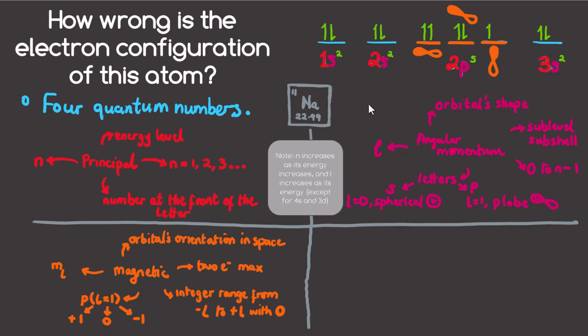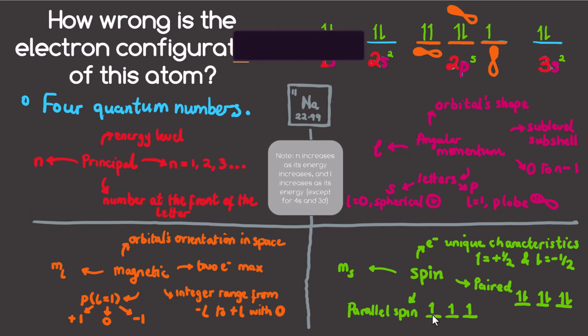The final one is called the spin quantum number, notated as ms. This reflects the intrinsic angular momentum of an electron. Electrons are known to have unique quantum numbers with the up spin indicated as positive half and the down spin as negative half. Parallel spin is when electrons in different orbitals have the same ms values. When electrons are paired in the same orbital, they have opposite spins, positive half and negative half.